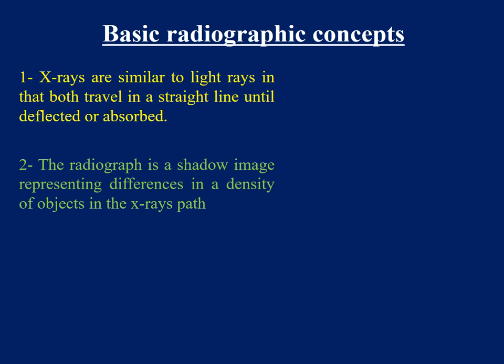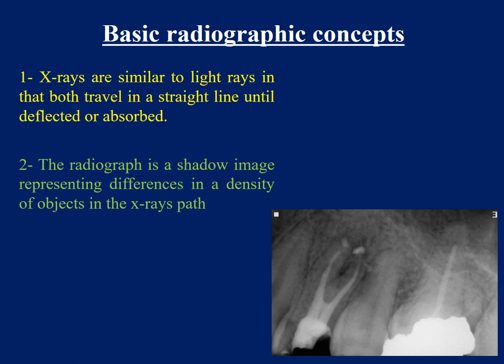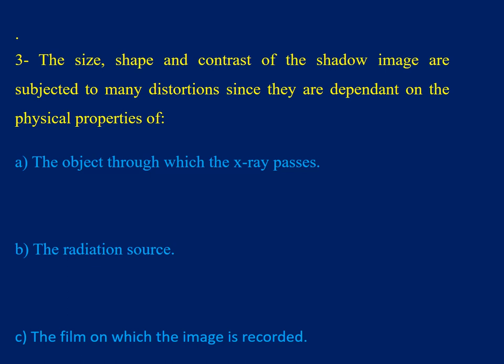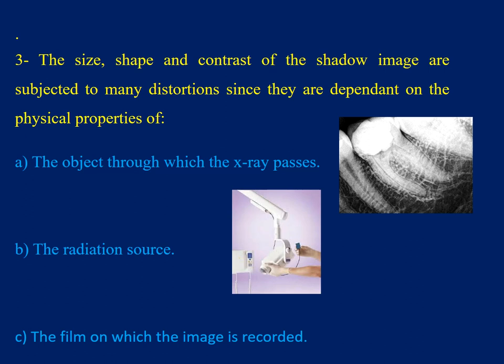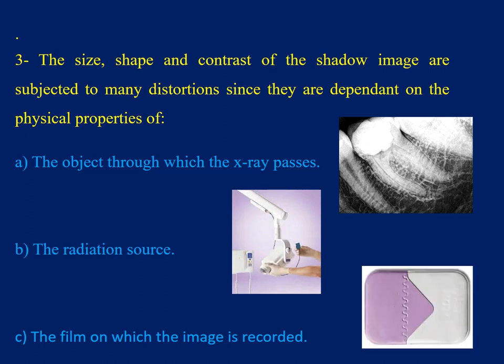X-rays are similar to light in that both travel in a straight line until deflected or absorbed. The radiograph is a shadow image representing differences in the density of objects in the X-ray path. The size, shape, and contrast of the shadow image are subject to many distortions, depending on the physical properties of the object through which the X-ray passes, the radiation source, and the film on which the image is recorded.